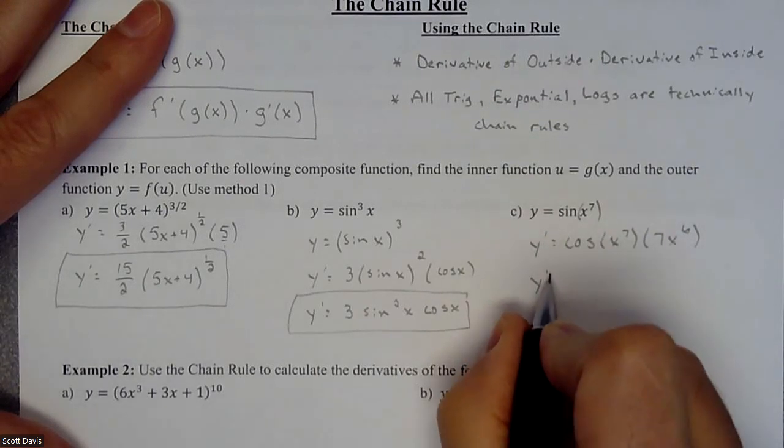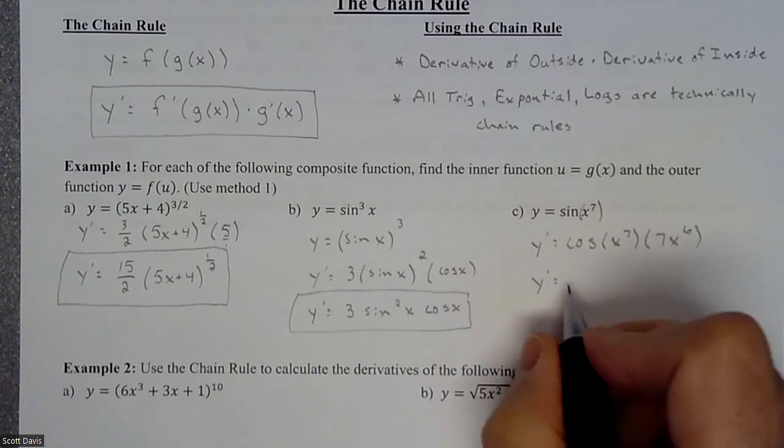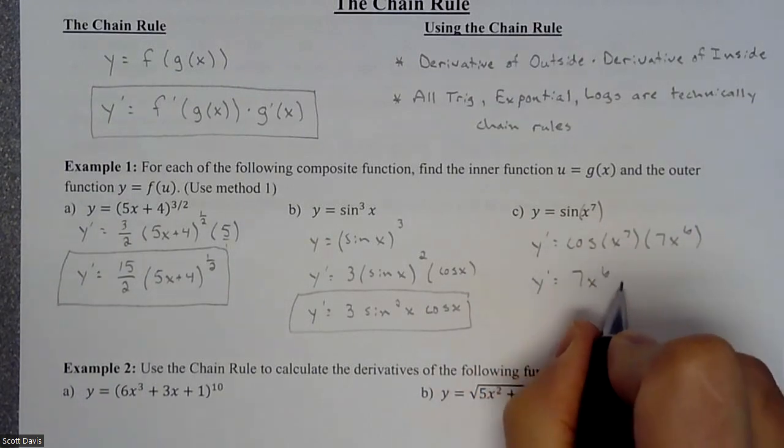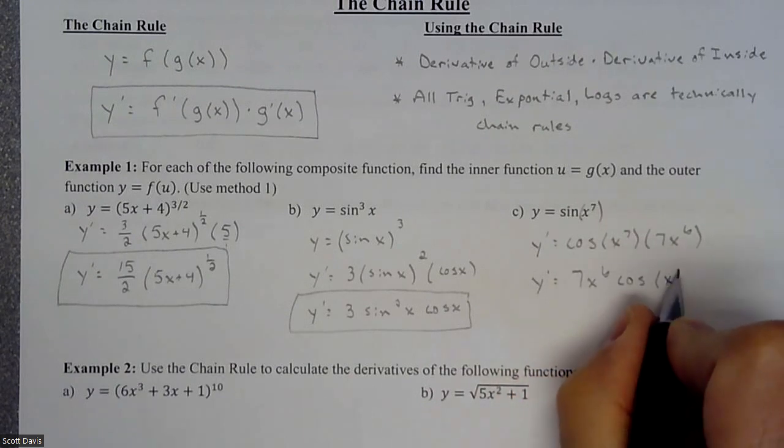So again, just a little bit of cleanup that I'm going to have. Let's put the seven x to the sixth on the outside, or in the front, times cosine of x to the seventh.